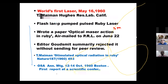The first laser was demonstrated in Ruby. The paper was mailed to Physical Review Letters on June 22, only to be turned down by the editor, because Memon had published papers on fluorescence in Ruby and the editor thought it was incremental work. Ultimately the paper was published in Nature in 1960 and was also presented at a scientific conference in Boston in October 1960.